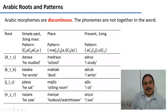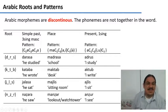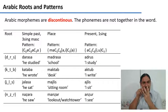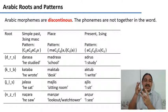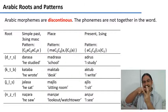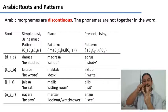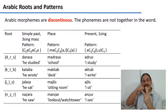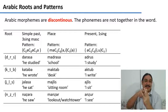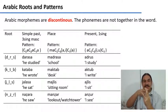For example, the morpheme to indicate the place for something has M, then A, then slots for C1 and C2, then either an A or I depending on the verb, then a slot for C3, and sometimes a final A. The root D-R-S, 'to study,' interleaved with the place pattern gives 'Madrasa' — school. K-T-B has to do with writing; interleaved with the place pattern, you get 'Maktab' — desk, the place where you write. J-L-S gives 'Majlis' — a sitting room, somewhere to sit and relax. And N-Z-R gives 'Manzar' — a lookout or watchtower.